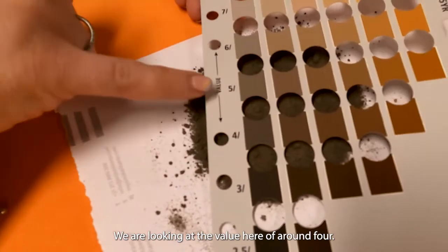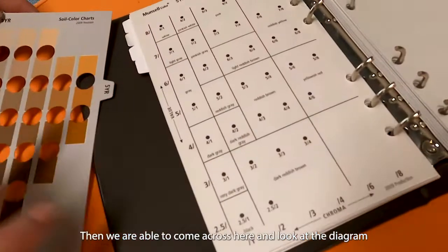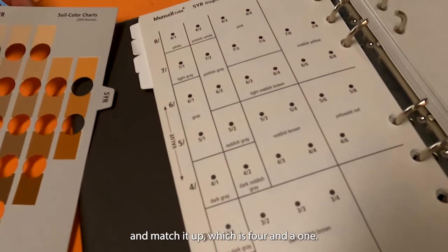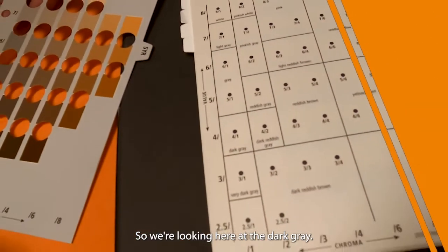We are looking at the value here of around four and looking at a chroma of one. Then we are able to come across here, look at the diagram, and match it up, which is our four and our one. So we are looking here at the dark grey.